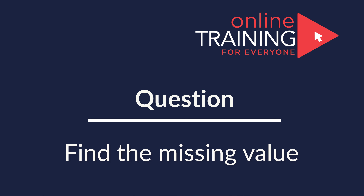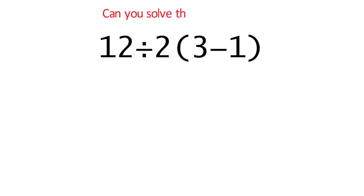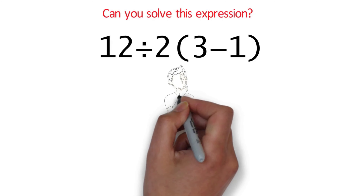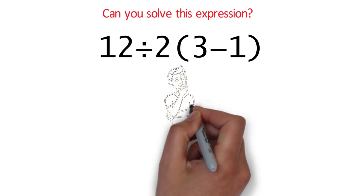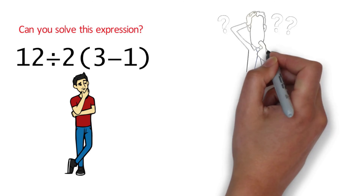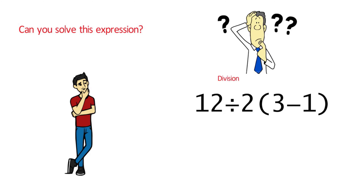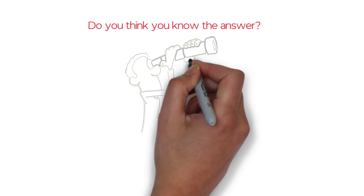Here's an interesting question that is easy to understand but fun to solve. You need to calculate the simple expression 12 divided by 2, then multiplied by the value in parentheses, which is (3 minus 1). Take a close look and see if you can come up with the answer. There are three operations here — division, multiplication, and subtraction — and you need to determine which to do first, second, and third.